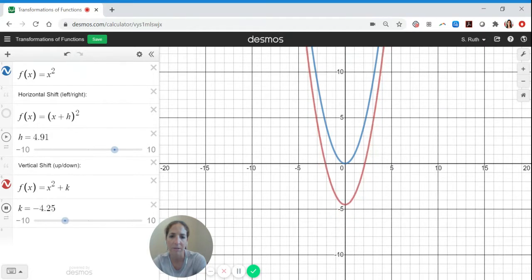So when k is negative, the graph shifts down. When k is positive, the graph shifts up. The general shape of the graph is maintained. Cool.